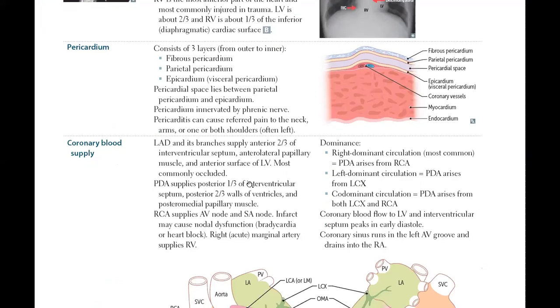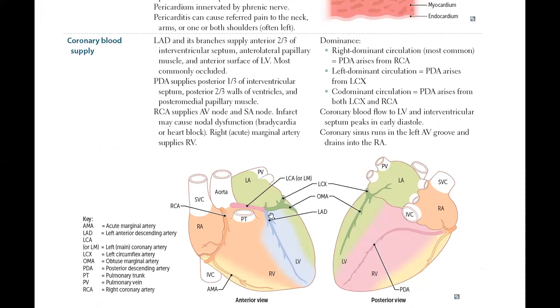We have right coronary artery and left coronary artery. Left coronary artery has LAD, left anterior descending artery, and circumflex artery. LAD and its branches supply anterior two-thirds of ventricular septum, also supply papillary muscle. We discussed the papillary muscle, it was the muscle which attached the cusp to the ventricular wall, and anterior surface of left ventricle. It is the most commonly occluded. The most commonly occluded artery is the left anterior descending.